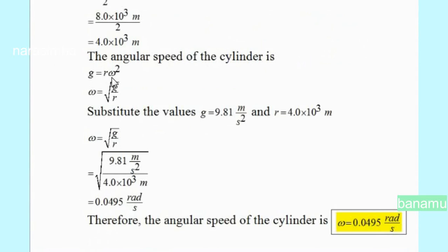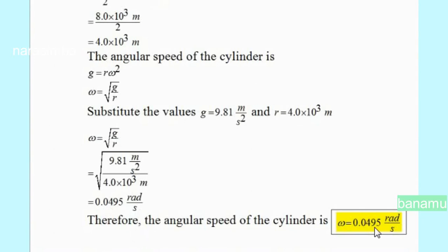From g equals r omega squared, omega equals the square root of g divided by r. Substituting the values g equals 9.81 meters per second squared and r equals 4 into 10 to the power of 3 meters, the angular speed of the cylinder is omega equals 0.0495 radians per second.